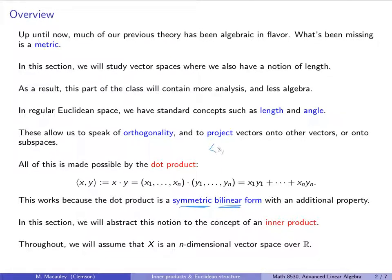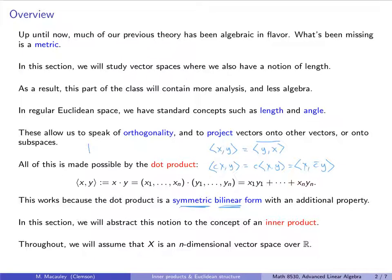In particular, the inner product in a complex vector space is not going to be symmetric, but it will be what's called conjugate or Hermitian symmetric — if you swap the order, you have to put a complex conjugate on top. Similarly, bilinear becomes sesquilinear: you can pull a constant out of the first coordinate freely, but pulling from the second requires a complex conjugate. This is because the norm squared of a complex number is not z² but z·z̄, i.e., (a+bi)(a−bi).